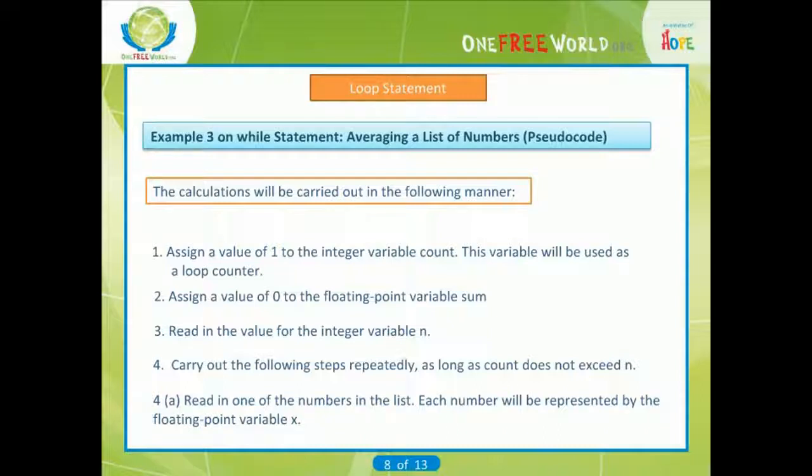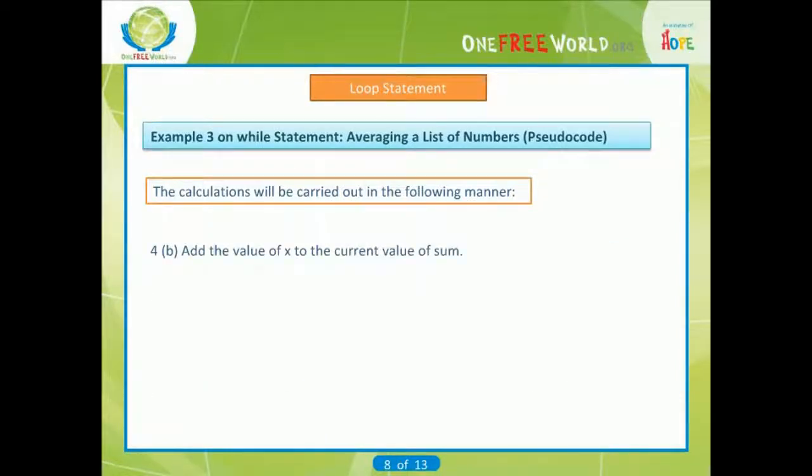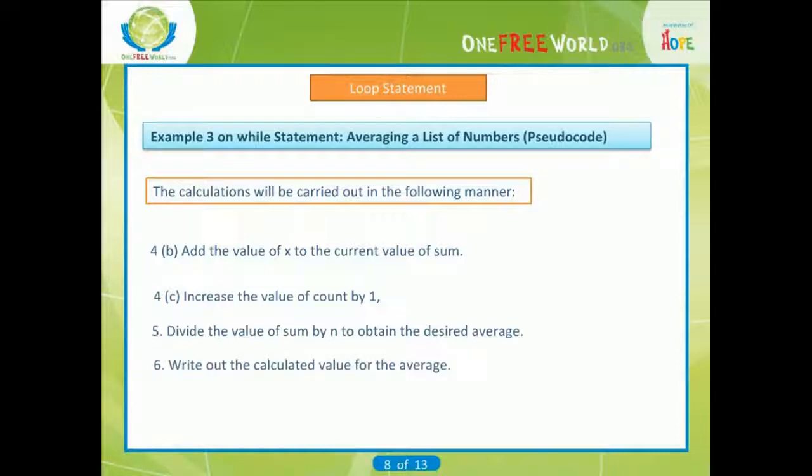Read in one of the numbers in the list. Each number will be represented by the floating-point variable x. Add the value of x to the current value of sum. Increase the value of count by 1. Divide the value of sum by n to obtain the desired average. Write out the calculated value for the average.